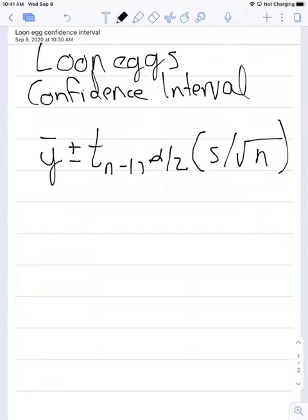This video is going to talk about how to do a confidence interval for the Loon eggs. We have some data already from the Loon eggs. To calculate the confidence interval, we're going to use this formula.